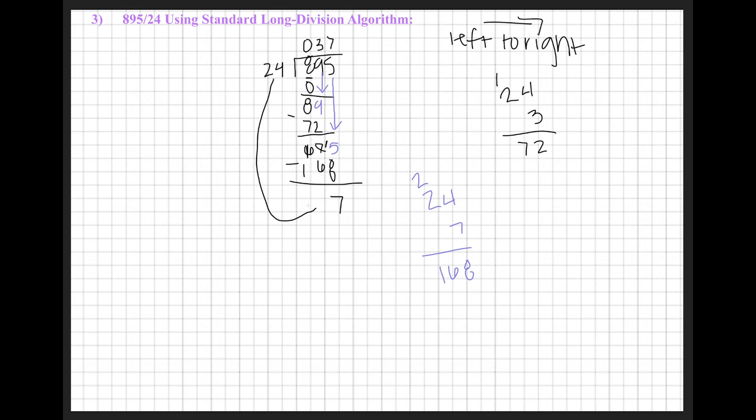There's no way for 24 to go into 7. There's no number of groups of 24 that would fit into 7, so we know that 7 is our remainder. And up top here, we have how many times we were able to equally put groups of 24 into 895. So our final answer for this is a quotient of 37 with a remainder of 7.